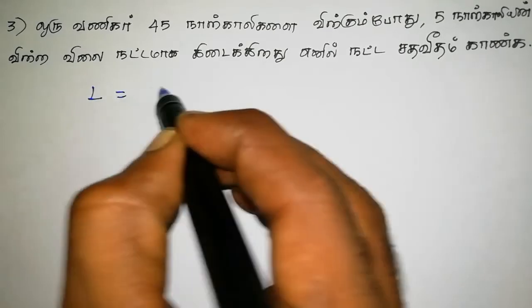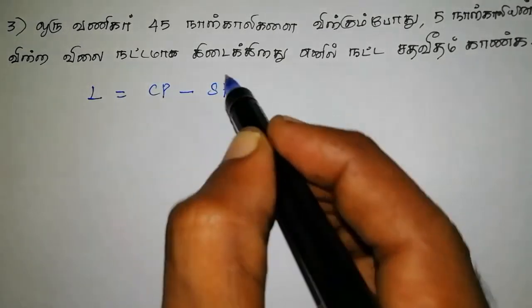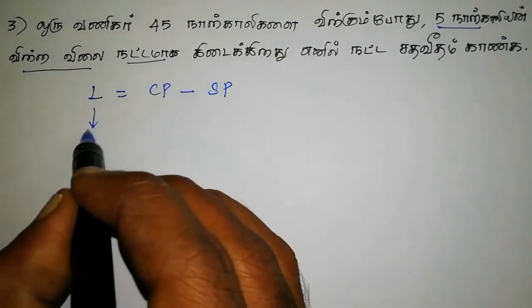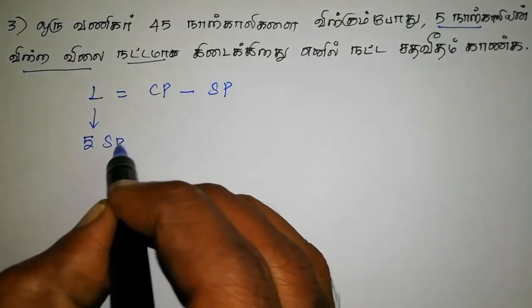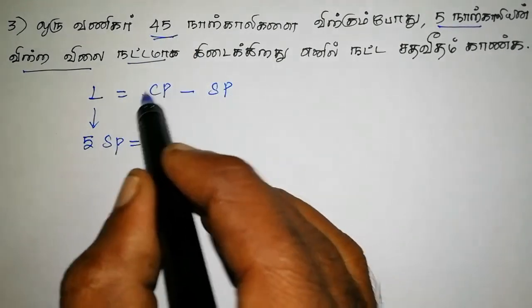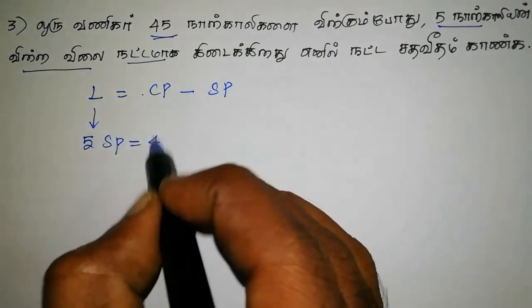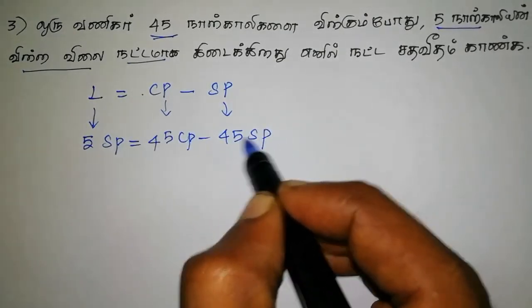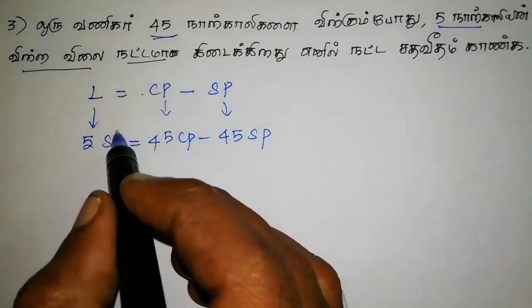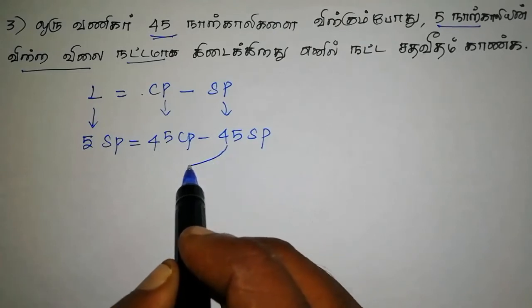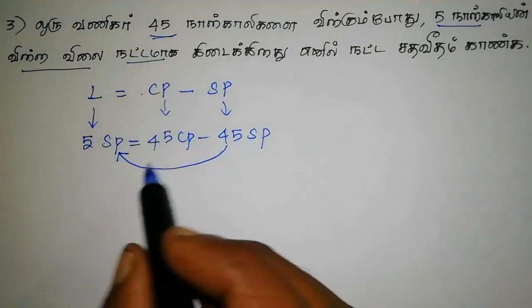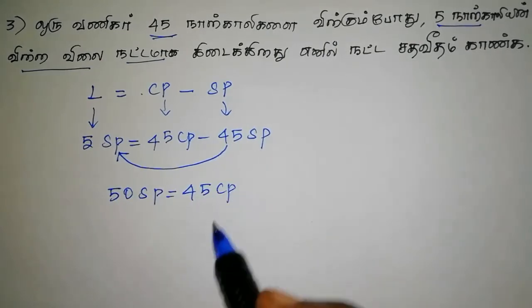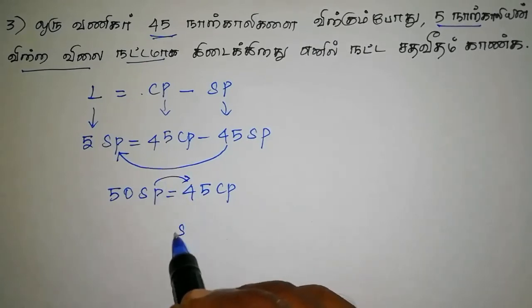Let's take a look. The formula: cost price minus selling price. The price equals 5 minus 4 — 50 highest. So 55 CP minus 45 SP gives 65 SP, then 45 SP and 55 SP values.